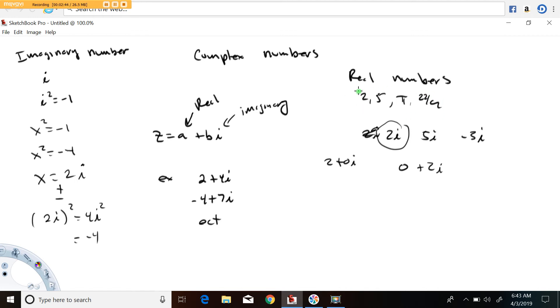You have imaginary numbers like 2i, 5i, negative 3i, where i is a value such that i squared equals minus one. And then in general, you have what are called complex numbers.